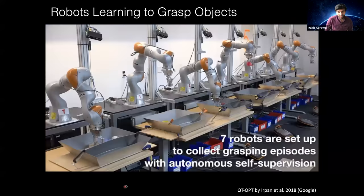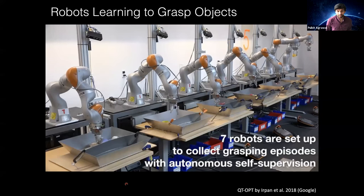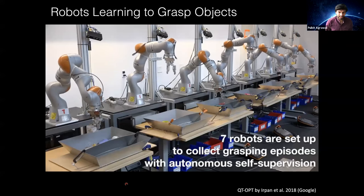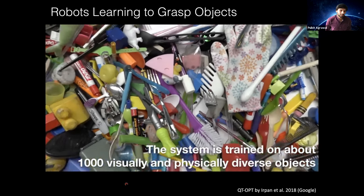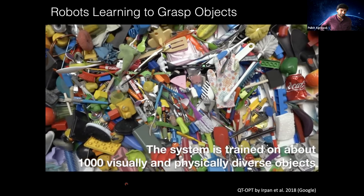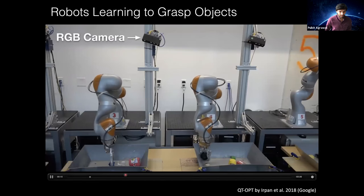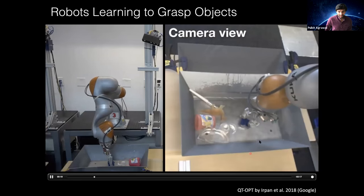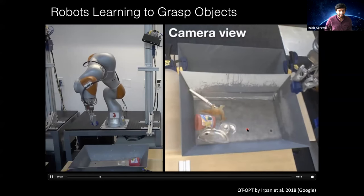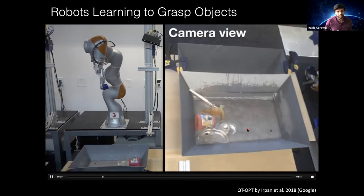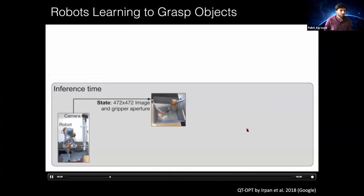There have been other applications, for example learning how to grasp objects. In this setup, multiple robots start off with a random policy — they don't know where to put the gripper to grasp the object and they might fail. Over time, they learn how to adjust the gripper so that these agents can successfully pick up objects.